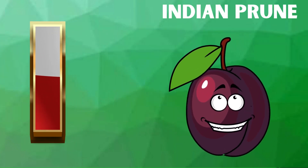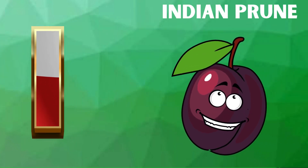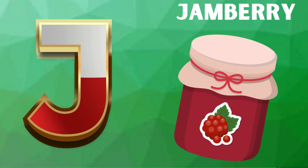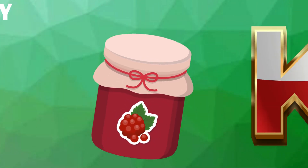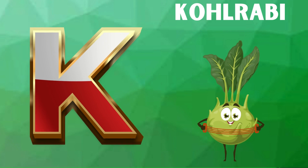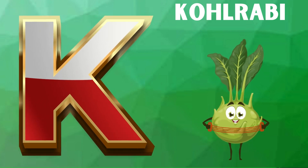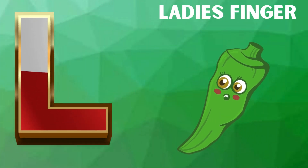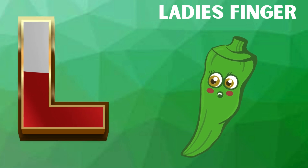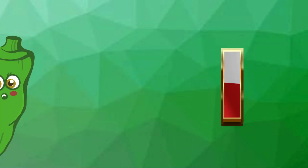I is for Indian prune, eh eh, Indian prune. J is for jamberry, juh juh, jamberry. K is for kohlrabi, kuh kuh, kohlrabi. L is for lady's finger, luh luh, lady's finger.